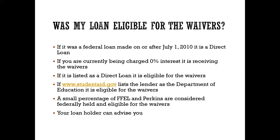If you're still not sure whether your loan was eligible for the waivers: if you know it's a federal loan made on or after July 1, 2010, it's a direct loan and 100% is getting the COVID waivers. If made before 2010, check if the interest rate shows 0%, or if it's listed as a direct loan. If you're unsure, log on to studentaid.gov, look at your list of loans, and check the column showing who the lender is. If the lender says 'Department of Education,' it is a federally held federal student loan eligible for the COVID waivers.